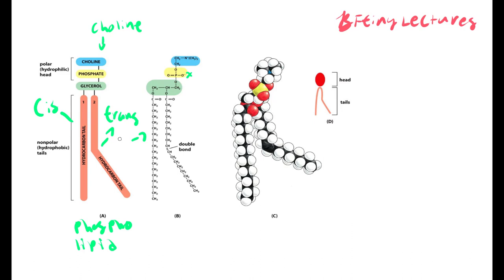The cis and trans conformations can affect the fluidity of the cell membrane. Think of it like oil — the membrane can be very fluid or very rigid. What dictates fluidity is actually double bonds: whether the fatty acids are saturated or unsaturated.